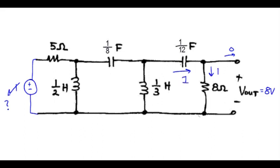And I see I forgot to write down the S domain versions of my elements, so let's go ahead and do that. The capacitor looks like 1 over CS, so that's 8 over S. Same reasoning, this would be 12 over S. Inductors are S times L.